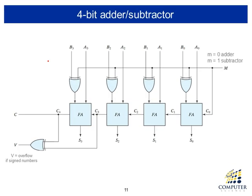Here is the circuit. We have a control signal M, and then we have four full adders. One of the inputs of each full adder has an exclusive OR gate. This circuit adds two 4-bit numbers — A and B — producing a 4-bit sum and a carry. Depending on the value of M, we achieve either addition or subtraction.